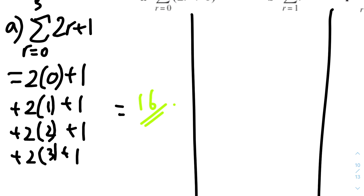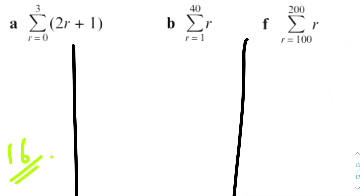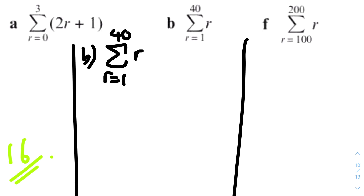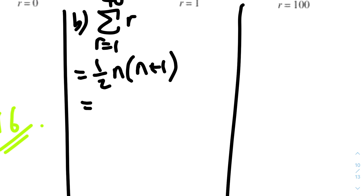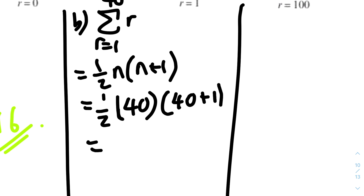Part b: find the sum of r from r equals one to r equals 40. We now have to use the sum of natural numbers formula, which is half n times n plus one. And n is the upper limit — in this case it's 40. So we substitute 40: half times 40 times 41, which is half times 40 equals 20, times 41, and that gets us 820.